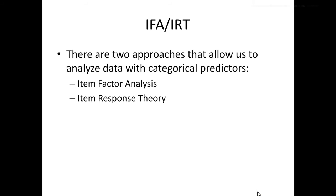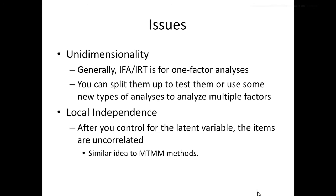These are two approaches that allow us to analyze data with categorical manifest variables. There are more options, like logistic regression, but that's really more of a simple regression analysis. We could treat this as item factor analysis or item response theory. On a basic level, the math is very similar, and when you have dichotomous or two outcomes, they are mathematically interchangeable. However, the traditional uses of them are very different. One big issue — and this is where IRT can get very complicated — is unidimensionality. Generally, both analysis types are for one factor only, because you're estimating the underlying latent and where each item measures best on that latent.